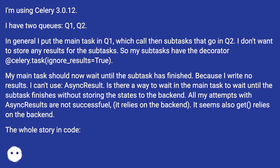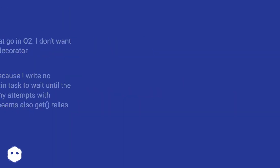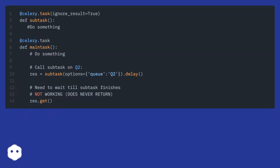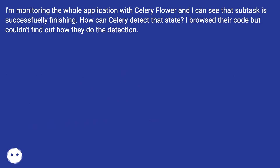It seems also .get() relies on the backend. I'm monitoring the whole application with Celery Flower and I can see that the subtask is successfully finishing. How can Celery detect that state? I browsed their code but couldn't find out how they do the detection.